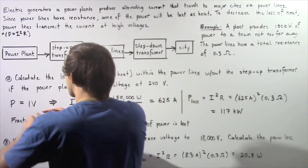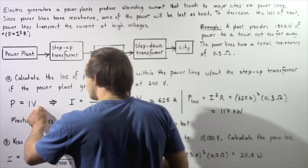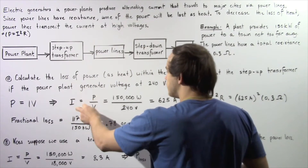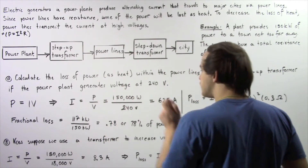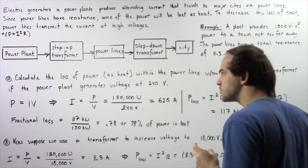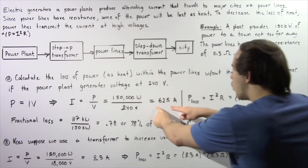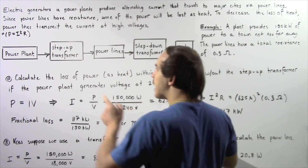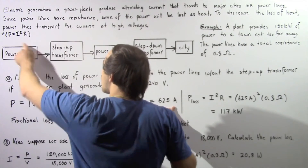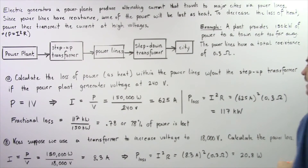We begin by calculating the electric current within our power lines when the voltage is 240 volts and the power produced is 150 kilowatts. Using the equation P = IV, we rearrange to get I = P / V, which equals 150,000 watts divided by 240 volts. That gives us an electric current of 625 amps. When this current travels within our wires it experiences resistance, so we calculate the power loss.